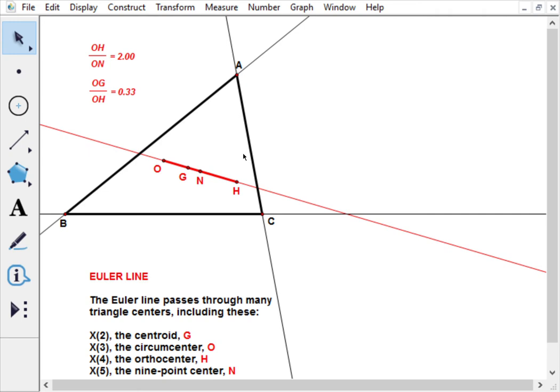It's kind of remarkable that even though these three points go back to antiquity, it was really Euler in the middle of the 18th century who was the first to notice that these three points were actually collinear.